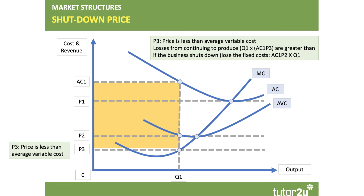If they were to shut down, however, they wouldn't incur the variable cost — they'd have to just pay the fixed costs. Fixed costs are the difference or the gap between the average cost curve and the average variable cost curve. So if they were to shut down, the loss would fall to this smaller area here. This is slightly less of a loss, and therefore it makes sense to shut down production.